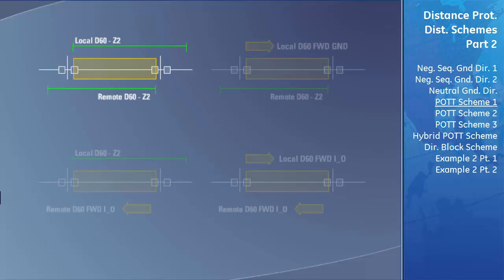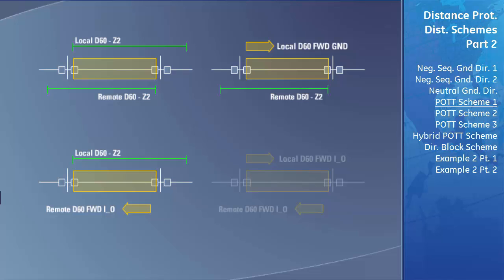As shown in diagram 1, if zone 2 of both relays identifies a fault, it clearly indicates the fault is on the transmission line. In diagram 2, the remote zone 2 indicates the fault is to the left of the remote relay, and the forward flow of ground current seen by the local relay indicates the fault is to the right — confirming the fault is on the transmission line. In diagram 3, forward flowing ground current of the remote relay and zone 2 pickup on the local relay confirm the fault is on the line. In diagram 4, both D60s see ground currents flowing into the transmission line, clearly indicating the line is faulted.